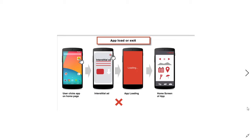First, you cannot show interstitial ads on app load or exit. For example, when a user clicks the app icon and you show an interstitial ad on the app load screen or splash screen before the main screen — this is totally disallowed. You cannot implement interstitial ads in this way, so please avoid this type of implementation.